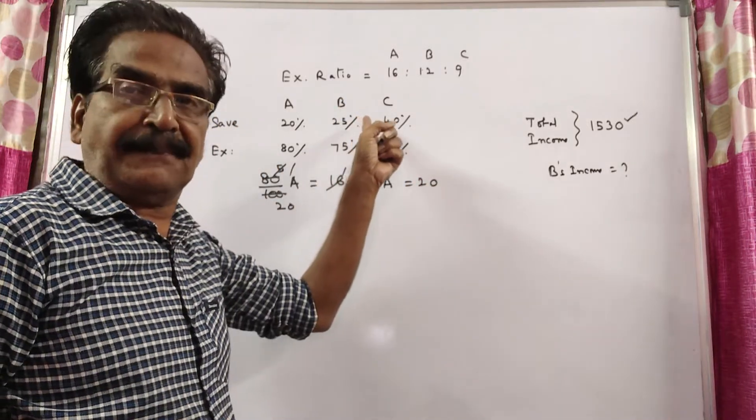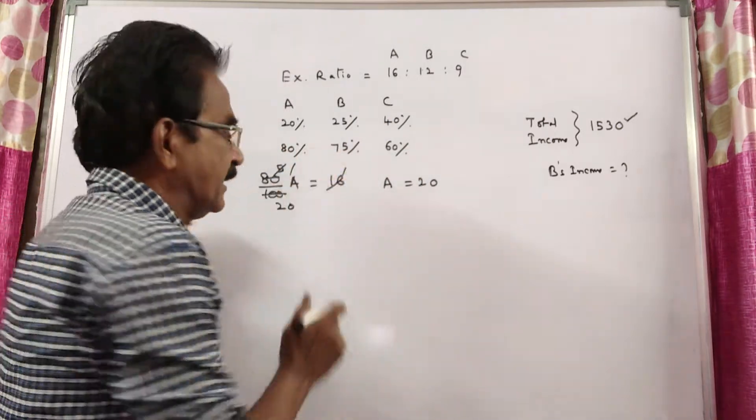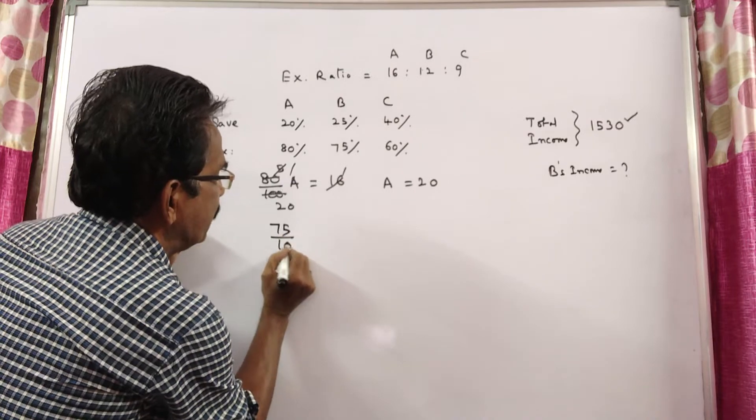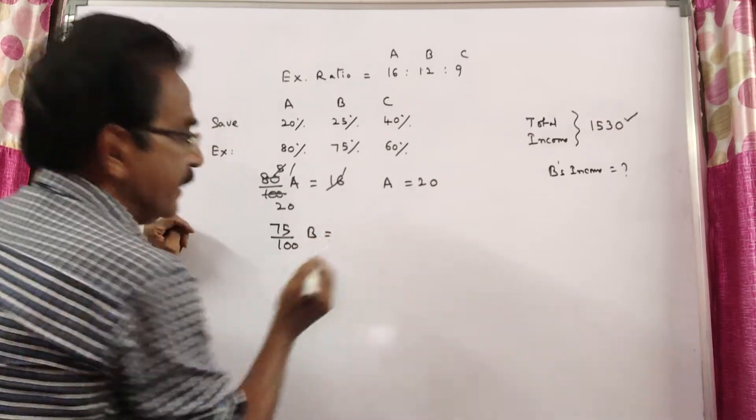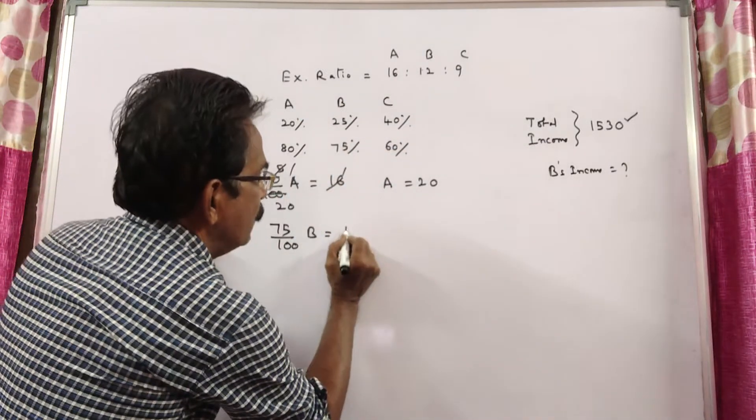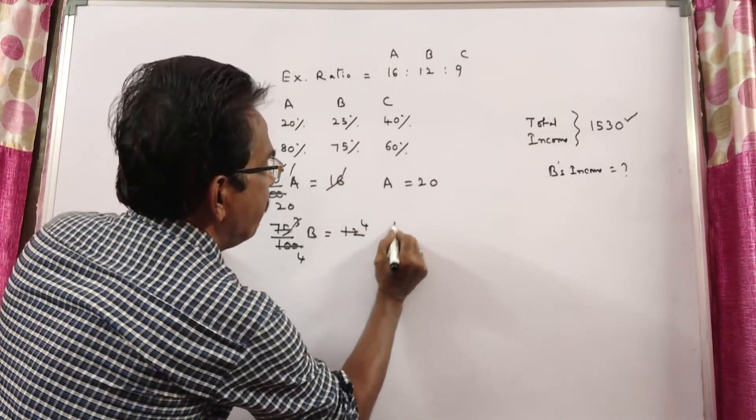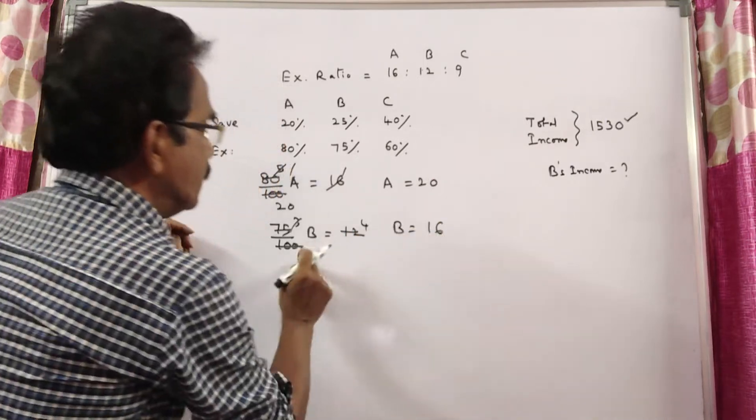B saves 25%, which means B spends 75% of his income. So 75% of B's income is his spending, which is 12. Therefore, B equals 16.